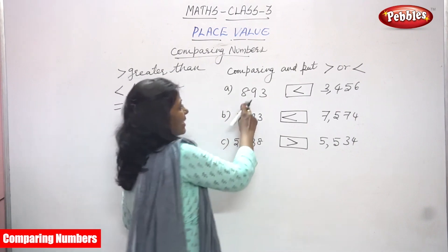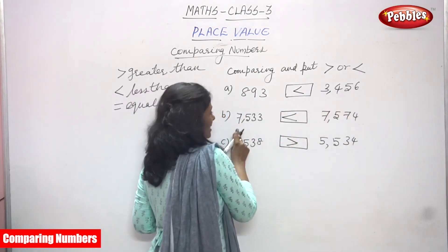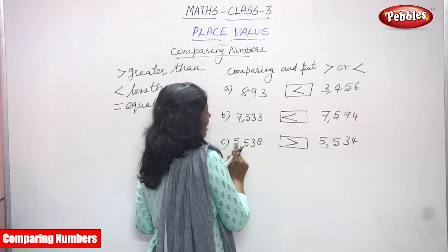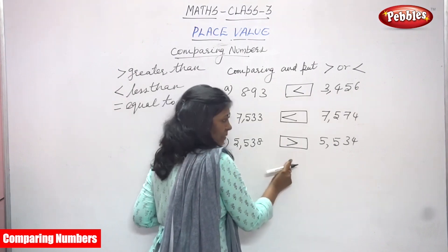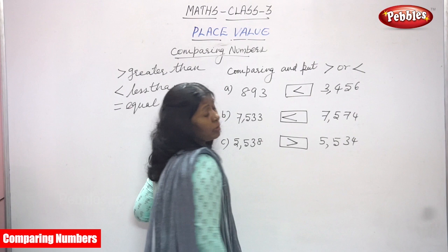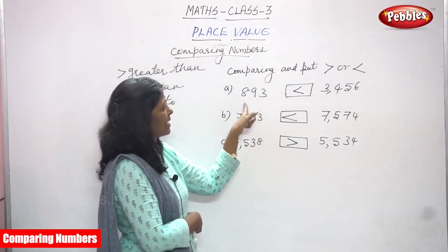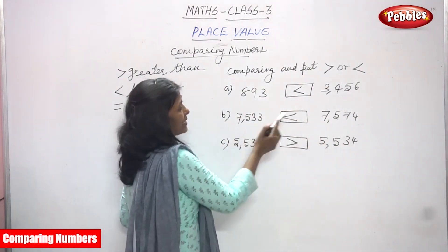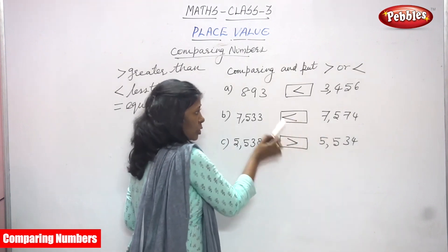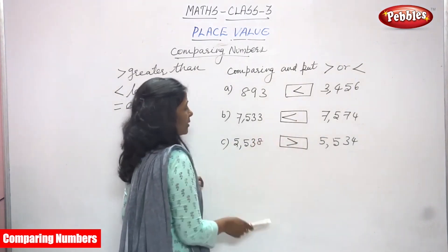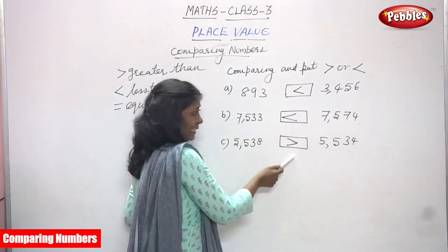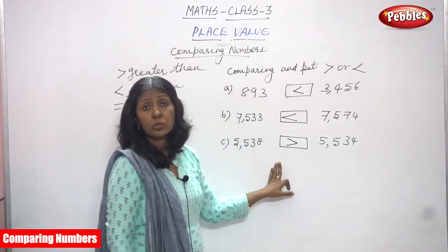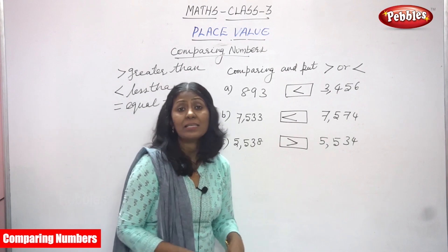So the first one: 893 is less than 3,456 — less than symbol. Next: 7,533 is less than 7,574 — also less than symbol, narrow mouth. And 5,538 is greater than 5,534 — greater than symbol, wider mouth. These symbols are correct. I think you understand the symbols now.